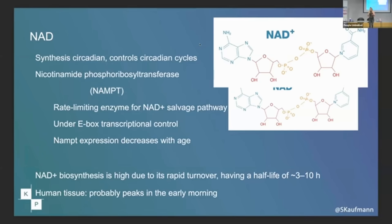When you activate your E-box, you're making the enzyme NAMPT, which makes NAD for your salvage pathway. So NAD is created in a circadian fashion. What's also fabulous is that the NAD then controls how this whole system works. So it's another fantastic layer of feedback systems.